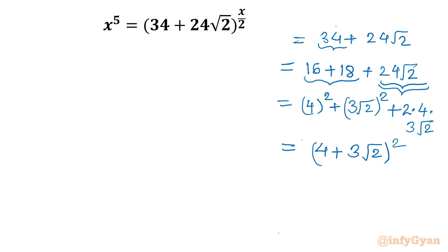So that means I can write x power 5 is equal to 4 plus 3 square root 2 whole square, and then its exponent is x over 2. Now I will use one exponential property which states that a power b whole power c is a power b times c.